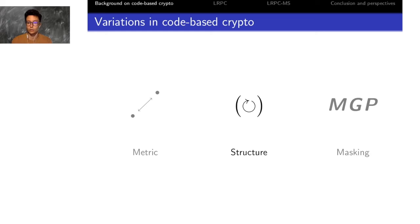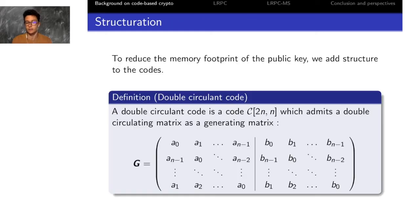Structure is a process in which you can reduce the size of your public key and your ciphertext by adding redundancy in the objects. A typical example of structured codes is the double-circulant code, which consists of two blocks of circulating matrix. If you define a double-circulant code, you only need to store the first line of the matrix to define the code. As you can see here, you have a gain of a factor n on the size of this code.